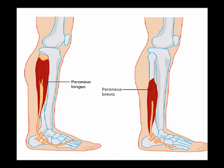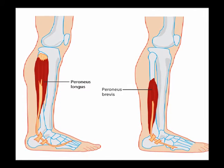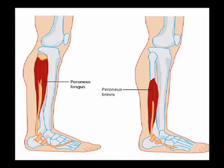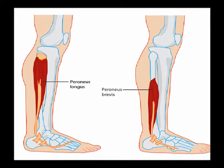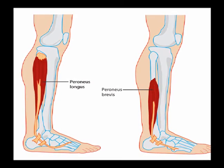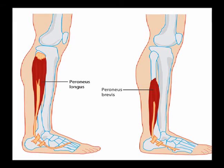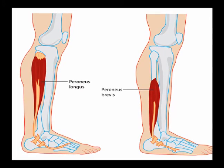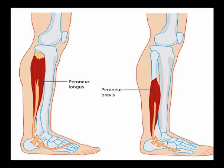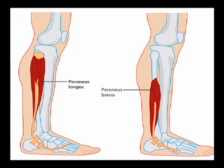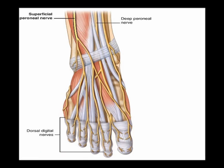The superficial peroneal nerve innervates the muscles in the lateral compartment of the lower leg. These are extrinsic foot muscles that perform ankle eversion — they are the peroneus longus and the peroneus brevis.